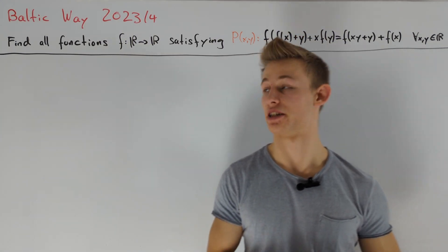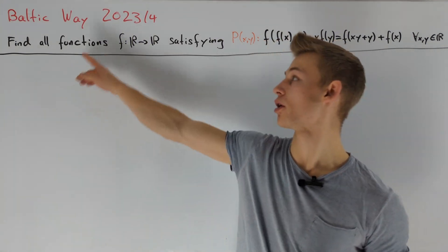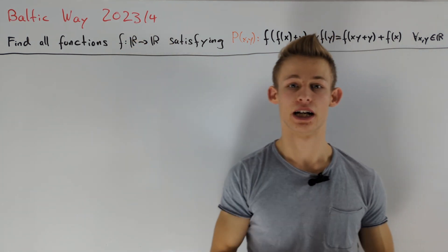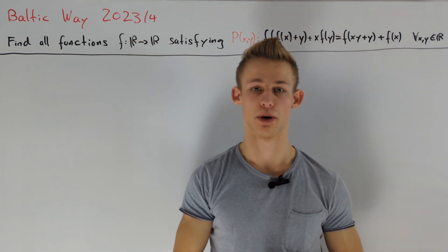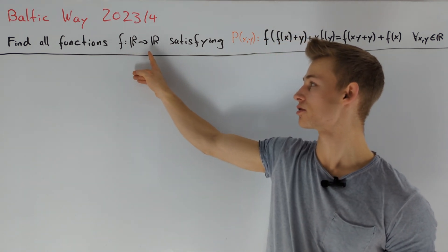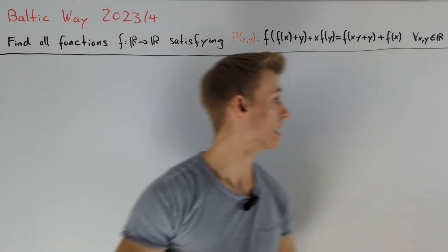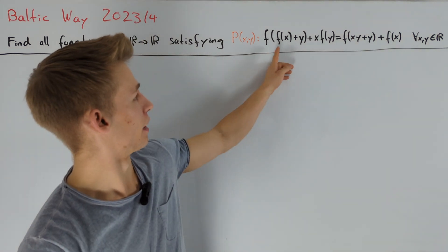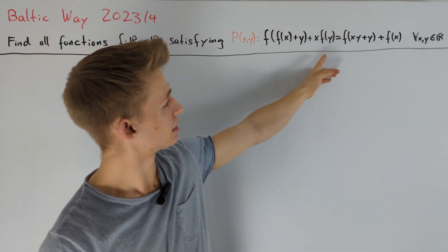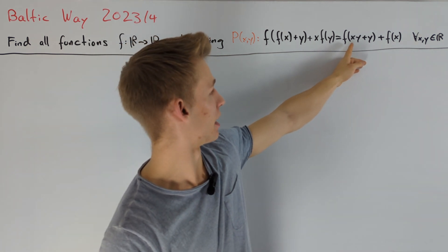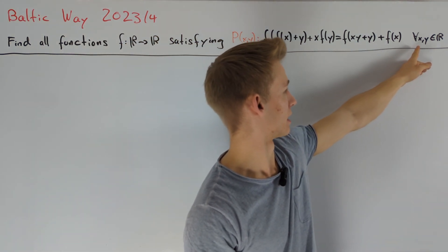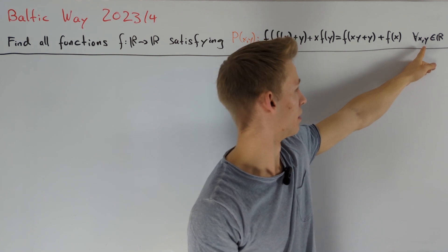Hey guys! Today I want to present a solution to the Baltic Way 2023 Problem 4. Let's have a look at the problem statement. We are asked to find all functions from the real numbers to the real numbers such that f(f(x) + y) + x·f(y) = f(xy + y) + f(x) for all real numbers x and y.